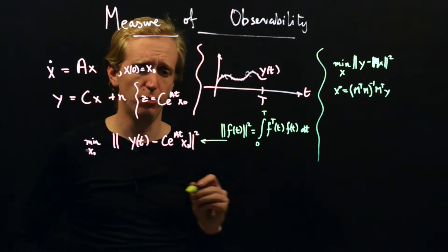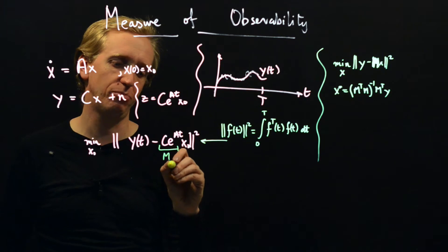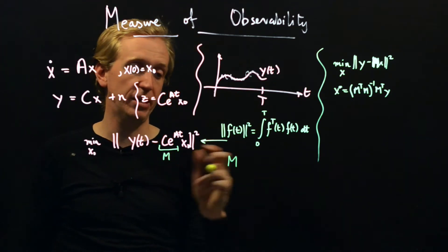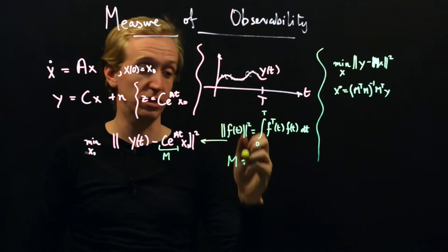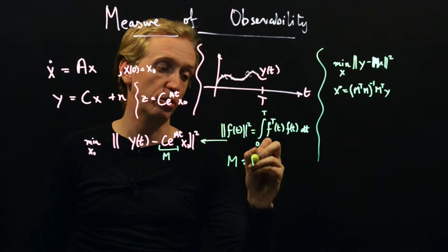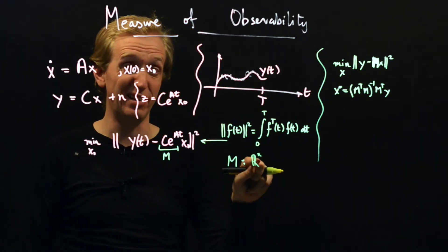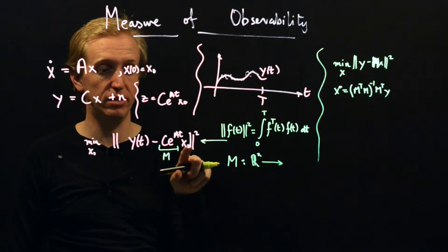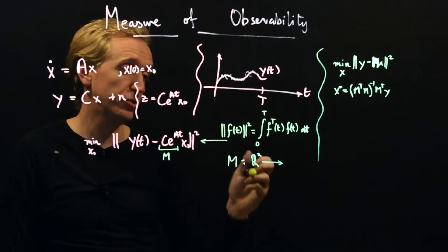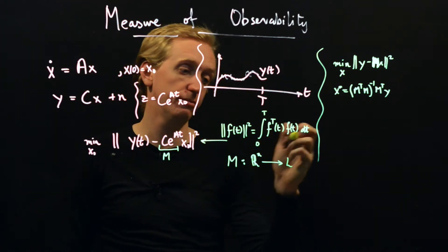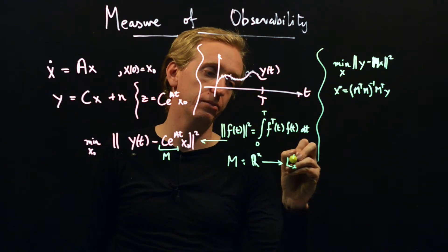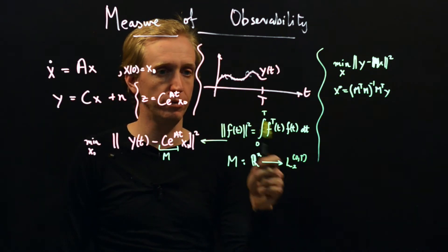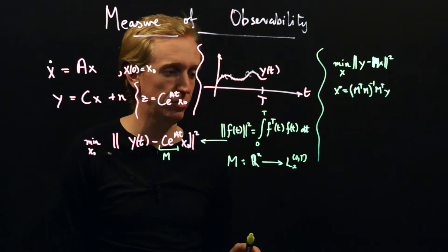So we can kind of see this here. This is our m playing the role of our matrix m. And what does this thing do? Well, it's some linear mapping. It takes as input a vector. So this is our guess for the initial condition. In our fancy notation, that was R^n. This is just an n-dimensional vector of real numbers. And what does this produce? Well, this produces a function. So m x0 is the function c e to the a t x0. And so this gives us a function. It's a square integrable function. So it's in our fancy space L2, 0 to t. So this is the space of functions that are square integrable on the domain 0 to capital T.